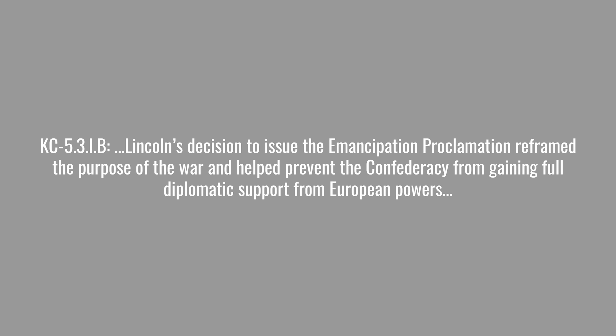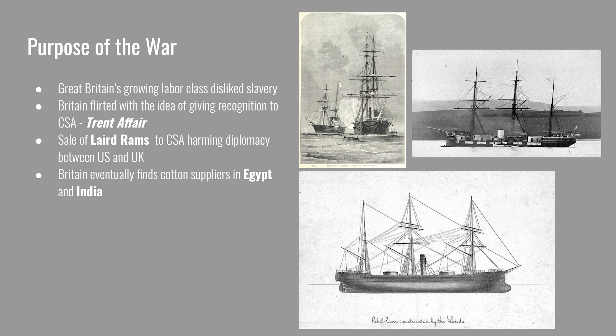The second part of the key concept says Lincoln's decision to issue the Emancipation Proclamation reframed the purpose of the war and helped prevent the Confederacy from gaining full diplomatic support from European powers. The main European power of concern was Great Britain. Britain's growing labor classes had always disliked slavery because enslaved labor directly competed against free labor and had diminished wages. Ideologically, the British also opposed slavery, and there was a strong abolitionist movement.